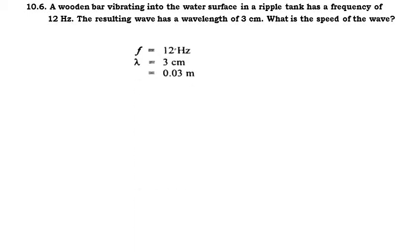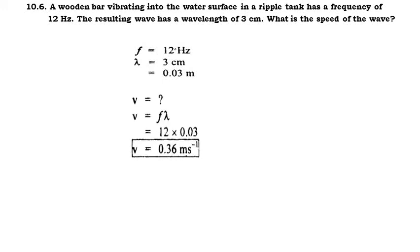In numerical 10.6, we have given the frequency of the ripple as 12 hertz and wavelength as 3 centimeters. We convert it to SI units: 3 divided by 100 equals 0.03 meters. We have to find the wave speed. Using the formula V is equal to F lambda, putting the values of F and lambda, we get the wave speed as 0.36 meters per second.